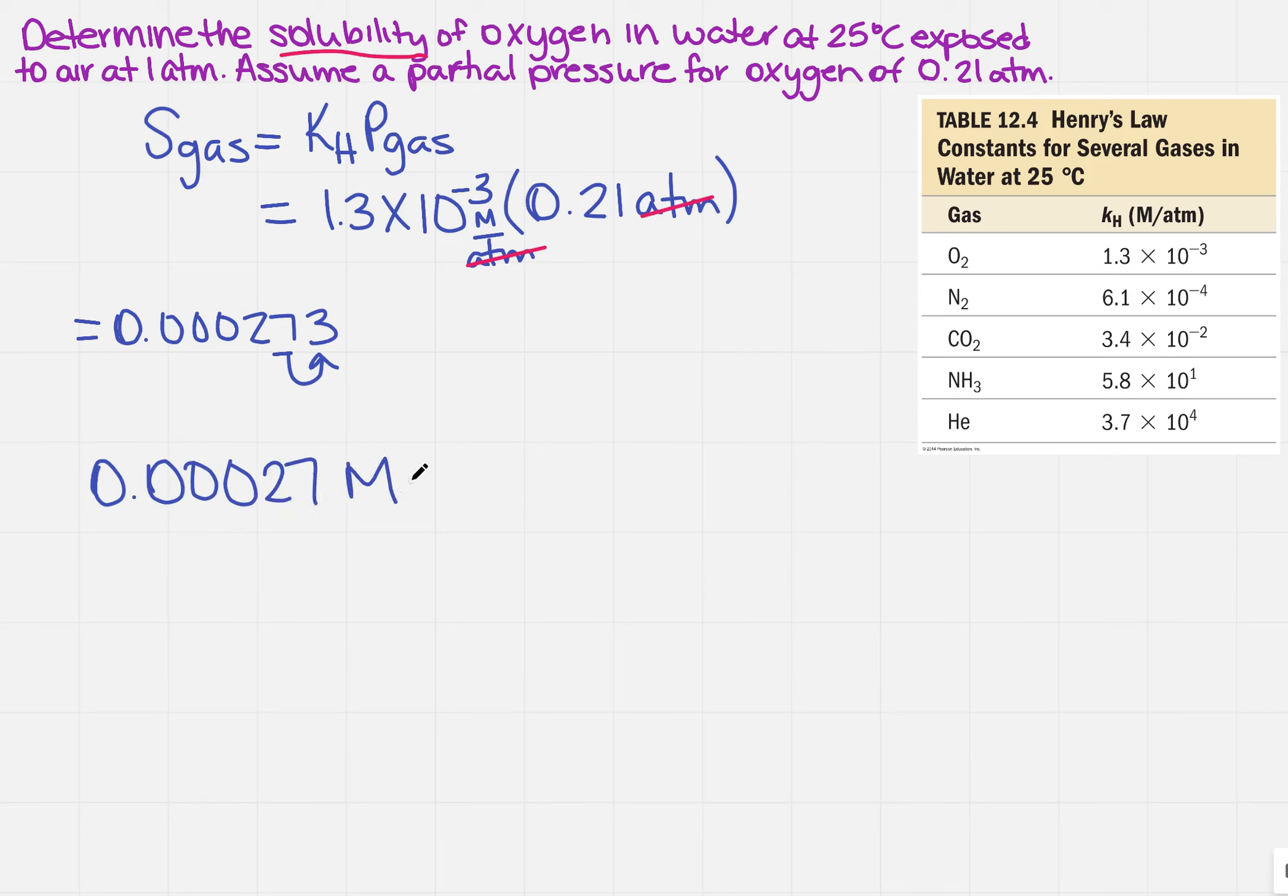Now, what if you're one of those people who likes scientific notation? That's great. So you can write it this way, or you could say that it's 2.7 times 10 to the 1, 2, 3, 4 minus 4 molar. So you can write it this way, or you could just write it this way.